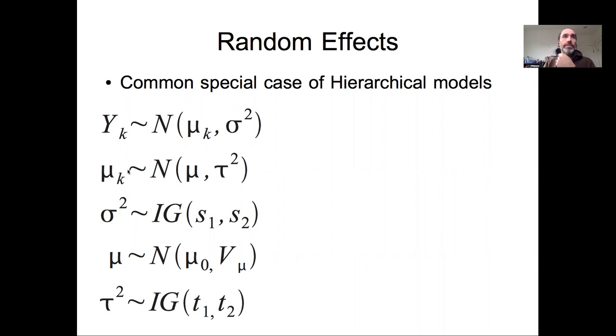On the left here I've written down the model we ended our last lecture with, which is a simple hierarchical means model. We have k data sets y through y_k, each of which has a mean mu_k. That mean mu_k is distributed with some overall across-dataset mean and across-dataset variability tau. We have a prior on the within-dataset variability, a prior on the across-dataset variability, and a prior on that global mean.